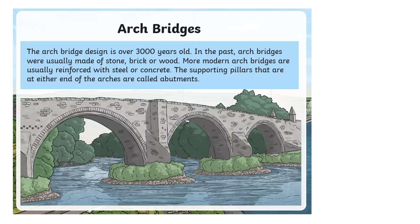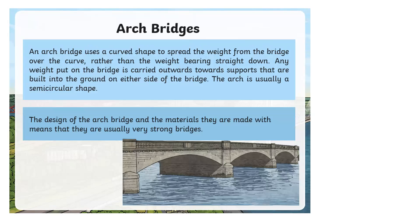Arch bridges are really impressive. The arch bridge design is over 3,000 years old. In the past, arch bridges were usually made of stone, brick, or wood. More modern arch bridges are reinforced with steel or concrete so that they can last longer. The supporting pillars at either end of the arches are called abutments. An arch bridge uses a curved shape to spread the weight over the curve rather than bearing straight down. Any weight put on the bridge is carried outwards towards supports built into the ground on either side. The arch is usually a semi-circular shape, and this design makes arch bridges very strong.